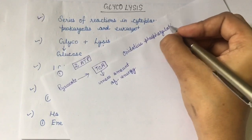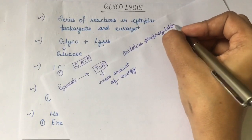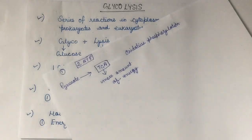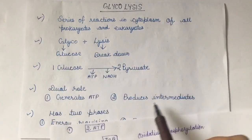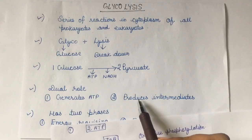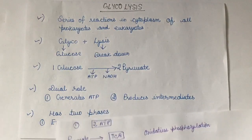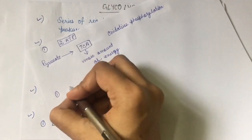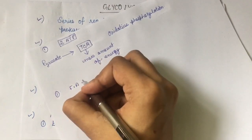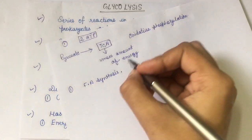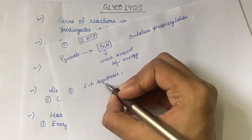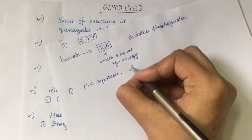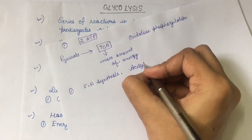So this is the significance of glycolysis. Secondly, it produces intermediates that act as precursors for fatty acid synthesis.